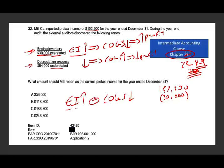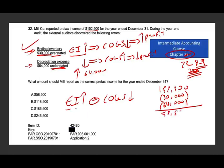Now, depreciation expense was understated — they underreported depreciation expense. When this is fixed, depreciation expense will go up by $64,000, so I have to reduce profit by an additional $64,000. Taking $152,500 minus $30,000 minus $64,000 gives us $58,500, and the answer is A.